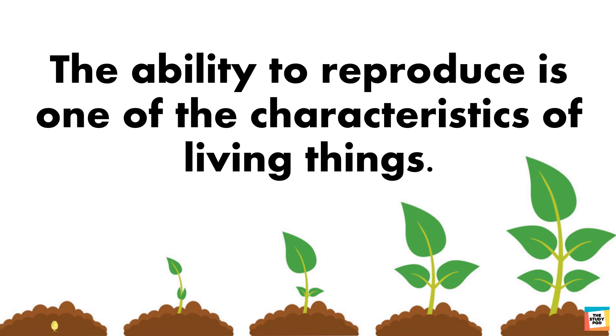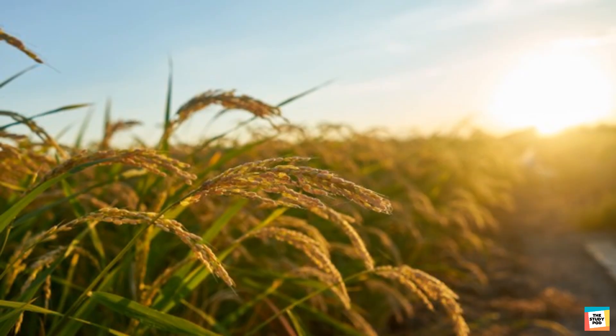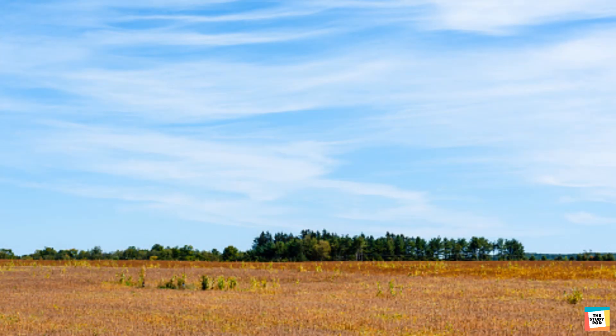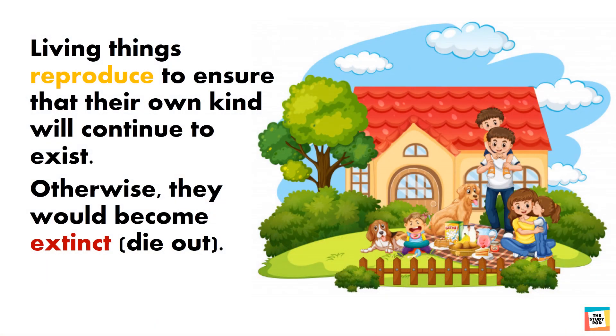Why is there a need for living things to reproduce? Imagine what would happen if rice plants were not able to reproduce. There would come a time when there would be no rice plants left. Living things reproduce to ensure that their own kind will continue to exist. Otherwise, they would become extinct.